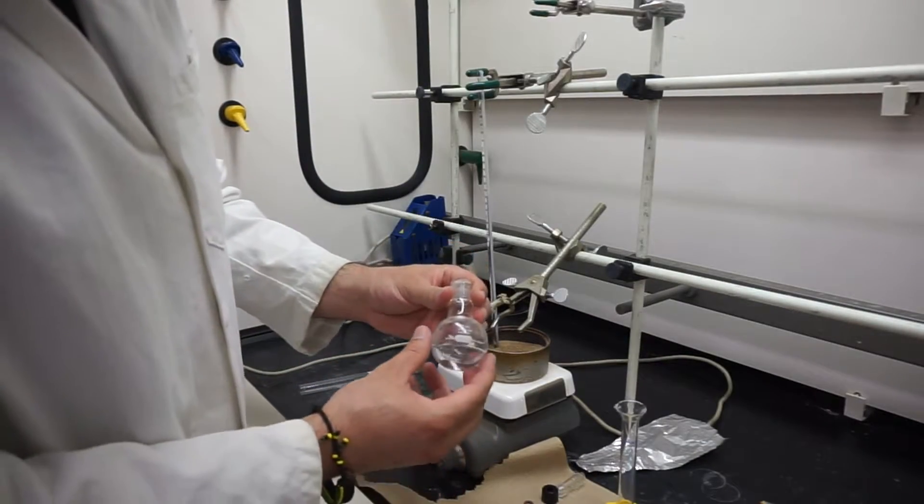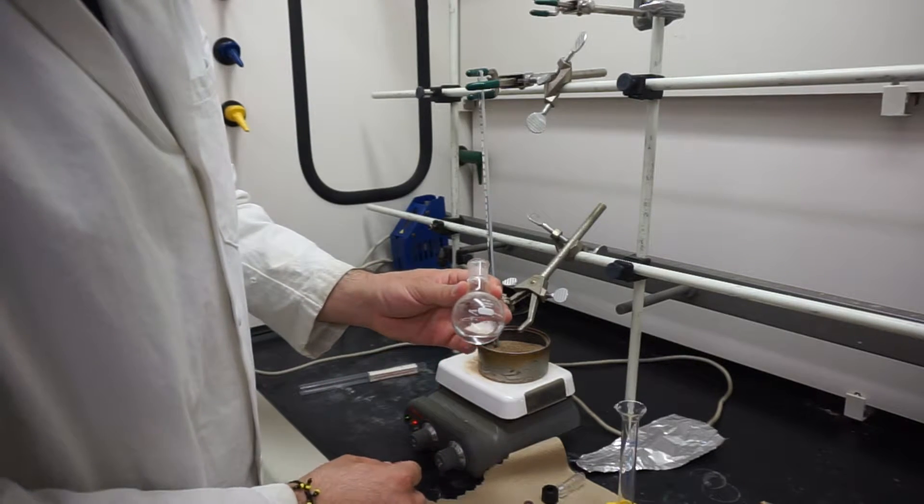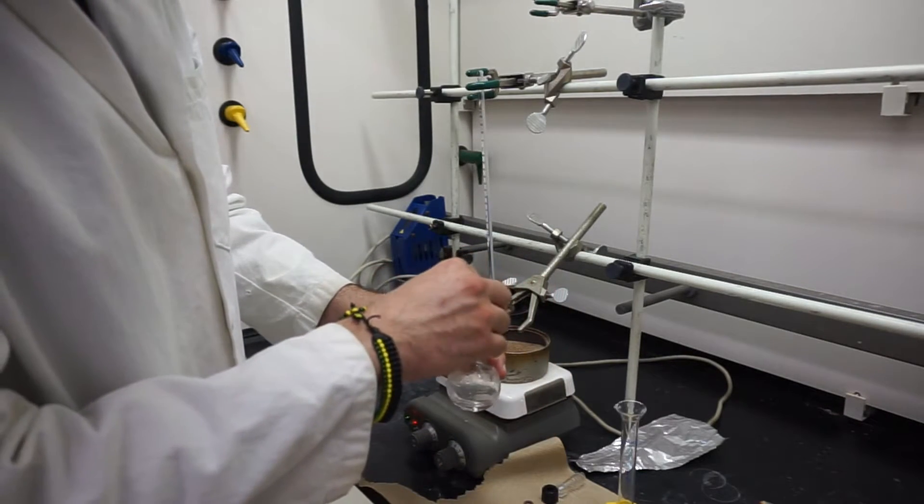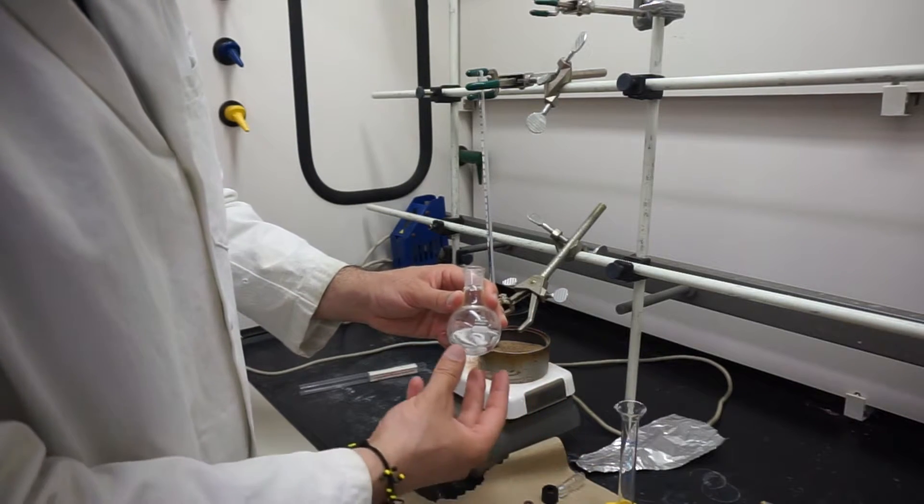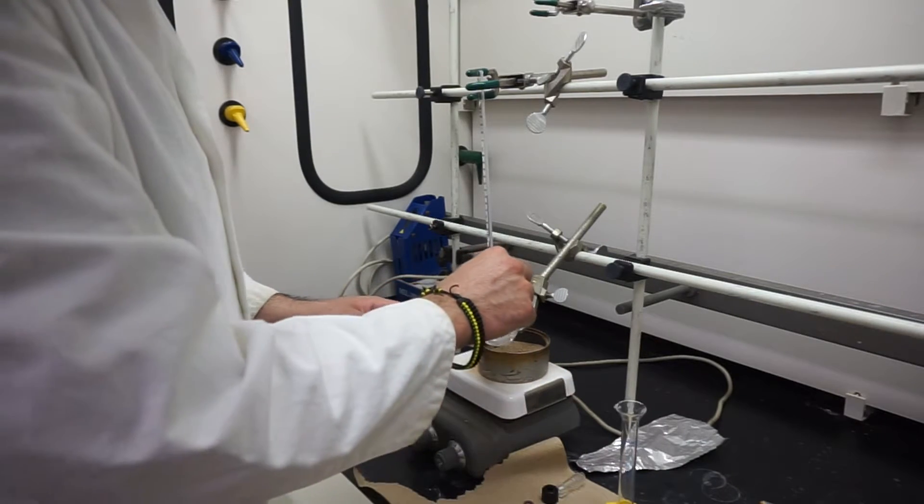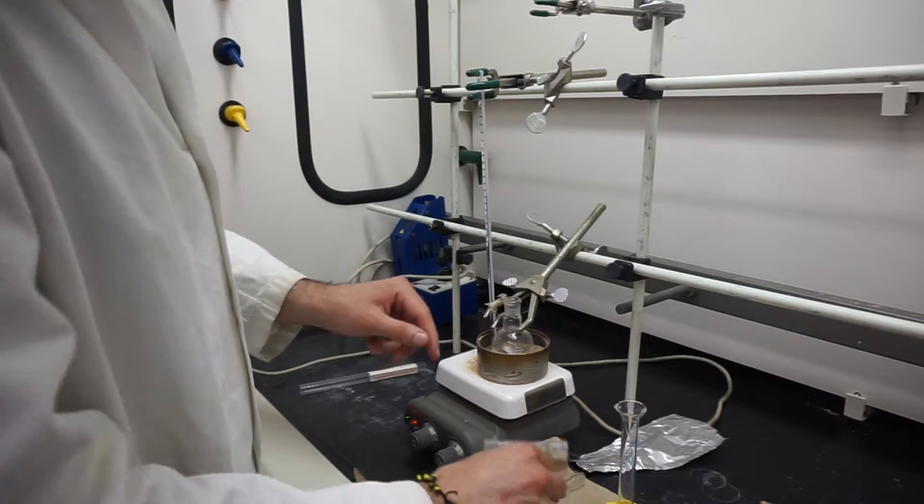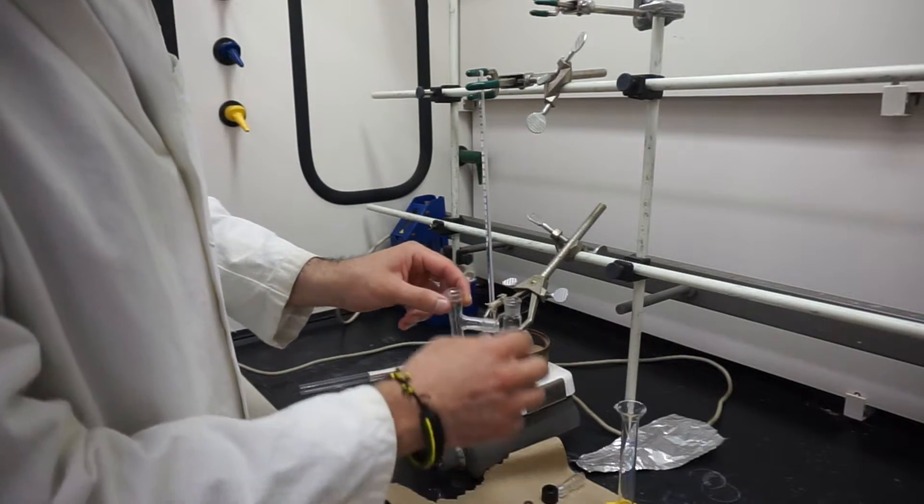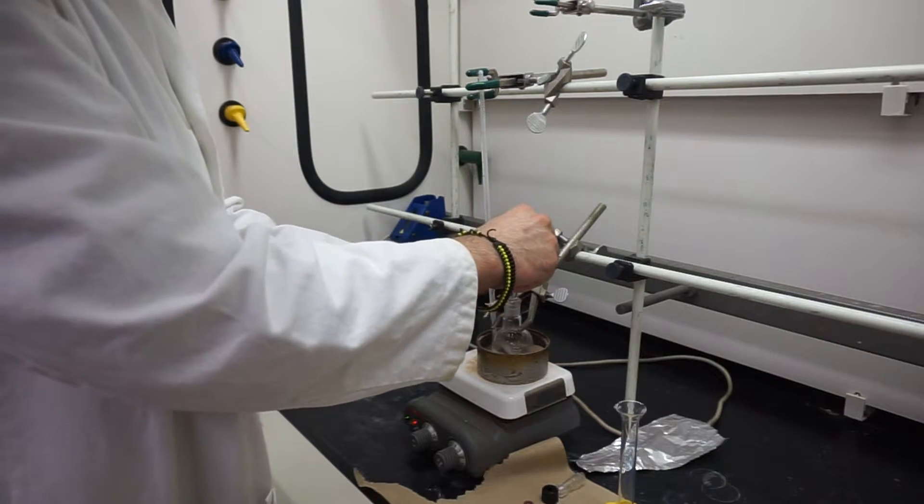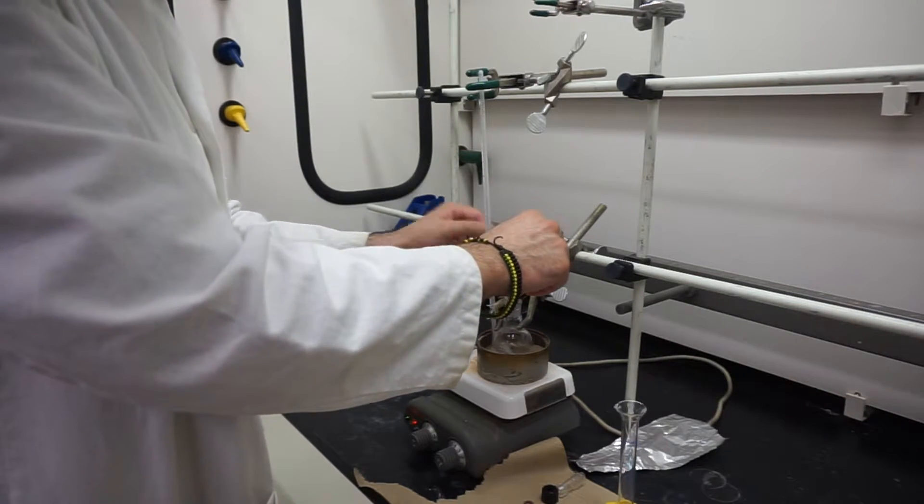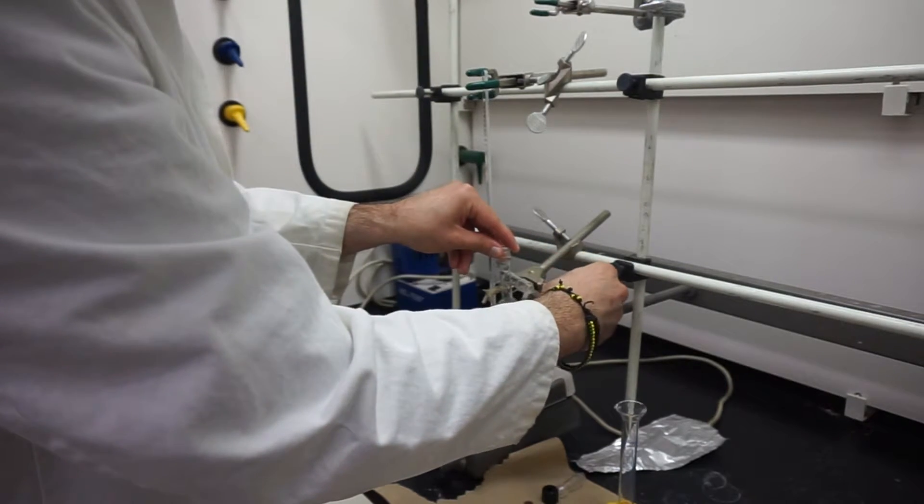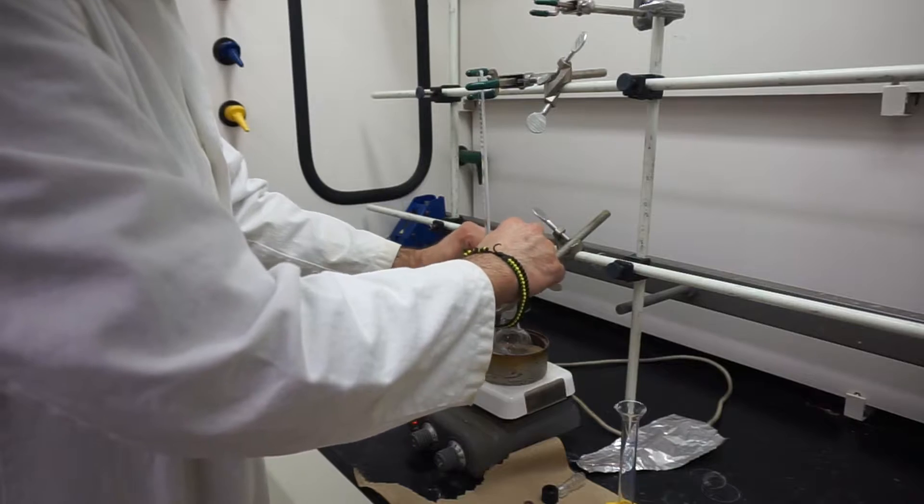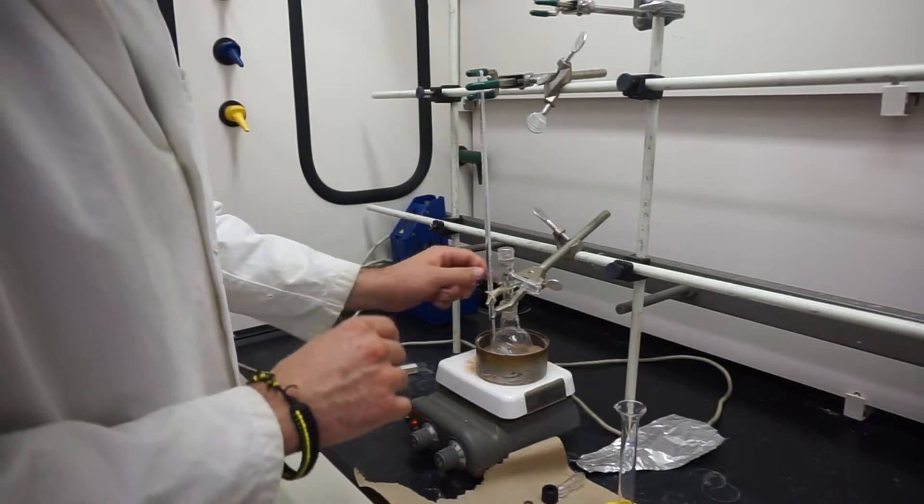The first thing we're going to do is take our round bottom flask with our solvent in there. Today I'm just using water, but use whatever solvent you're going to be using. I'm going to put my stir bar in there—typically you're going to have your stir bar in there before you add your solution. We'll take our three-way distill head, put just the smallest amount of grease on it, and put that over the top. Once that is attached, we'll clamp them together to make sure it's stable.